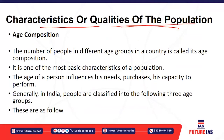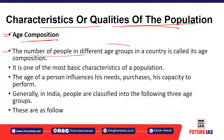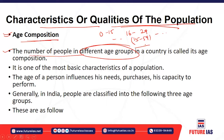Now let's understand the characteristics of the population, which are also shown in census data. First is age composition — what it means is how many people are in each age group. The number of people in different age groups — for example, 0 to 15, 15 to 59 — is called the age composition of the population, and it is the most basic characteristic of a population.